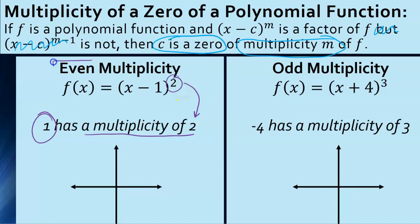So we don't always need to write that out. Instead, the factor — if it has an exponent — that exponent tells you what the multiplicity is. It tells you how many of the same zero we would have. The key here is we're looking at even multiplicities. Anytime we have an even multiplicity, so this would have an x-intercept of 1, that means the graph is going to bounce off that x-intercept.